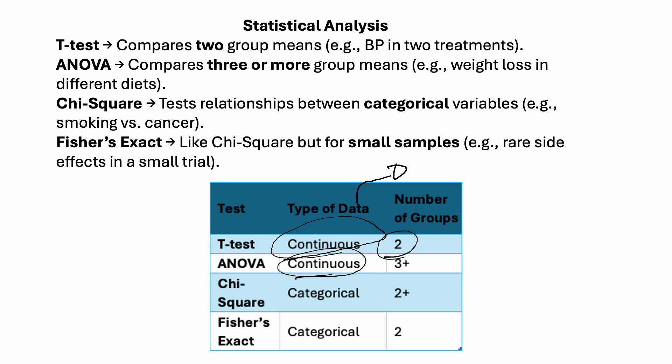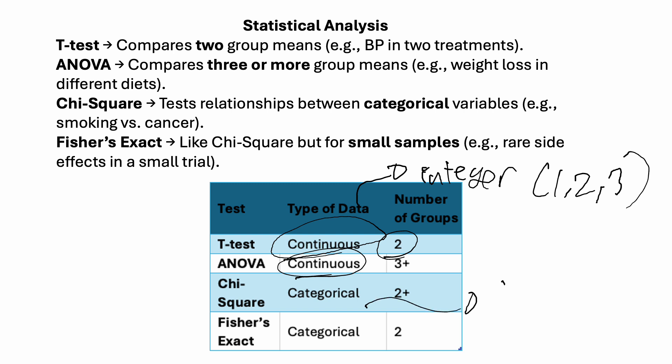When you look at type of data, continuous means the data is typically an integer like 1, 2, 3, etc. When we get to chi-square tests, this will test the relationship between categorical variables such as yes or no — for example, smoking versus cancer with yes or no outputs. You also have Fisher's Exact, which is less commonly tested but is essentially like a chi-square analysis for small samples, like looking at rare side effects in a small trial.